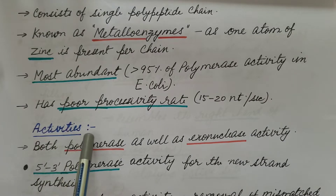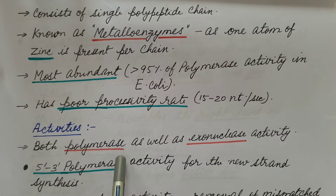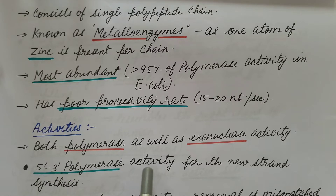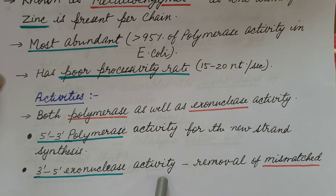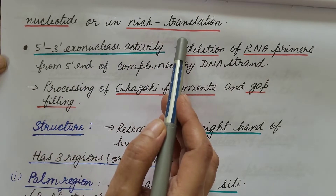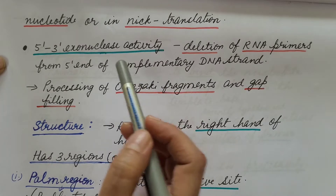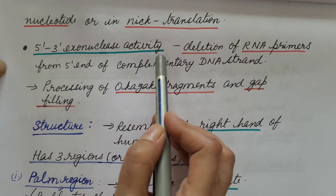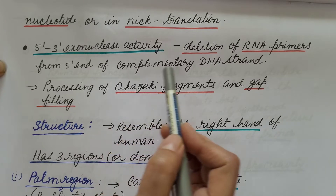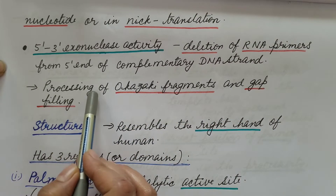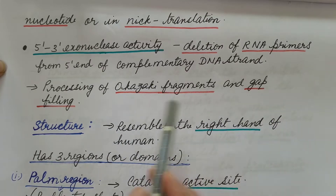The activities of DNA polymerase 1 include both polymerase and exonuclease activity. First, 5'→3' polymerase activity for new strand synthesis — it synthesizes the new strand complementary to the template strand. Second, 3'→5' exonuclease activity for removal of mismatched nucleotides or nick translation. Third, 5'→3' exonuclease activity, which deletes RNA primers from the 5' end of the complementary DNA strand. Hence, it is involved in the processing of Okazaki fragments and gap filling.